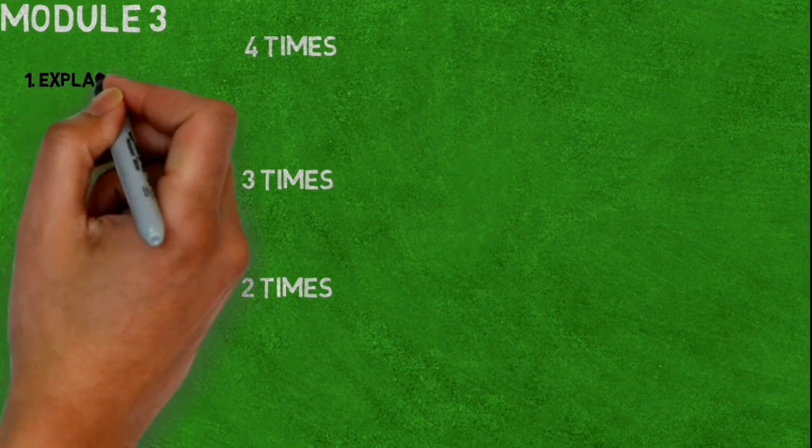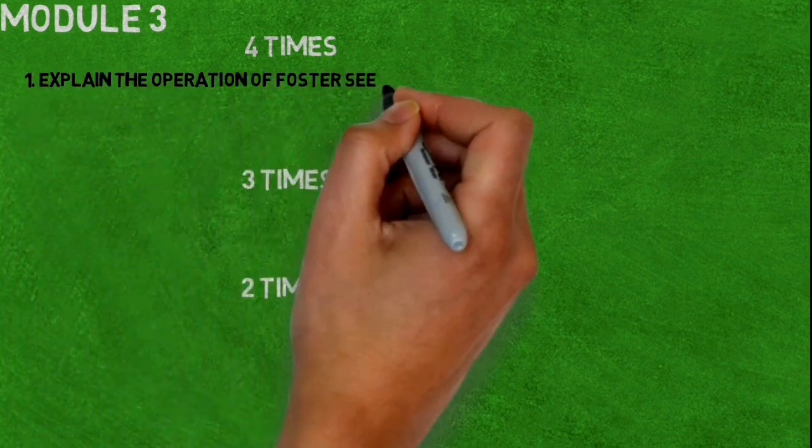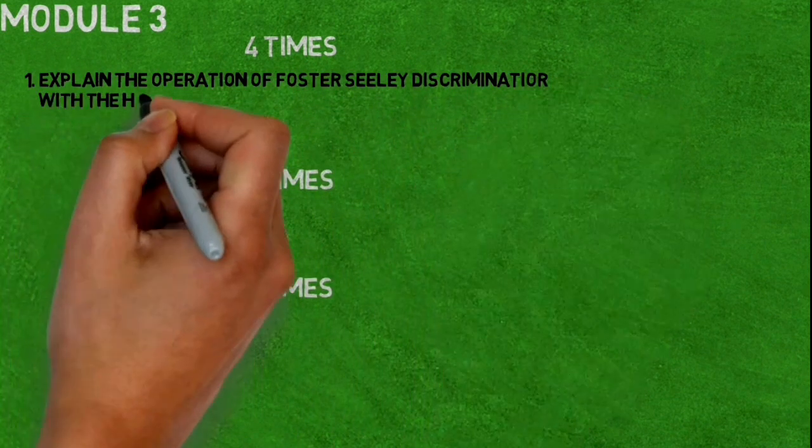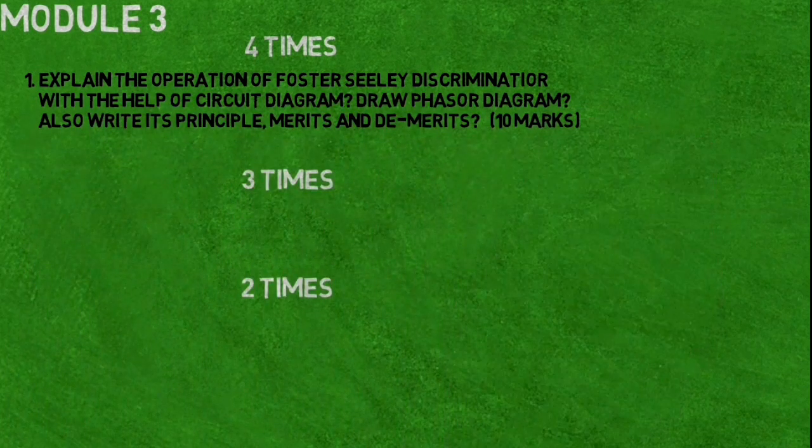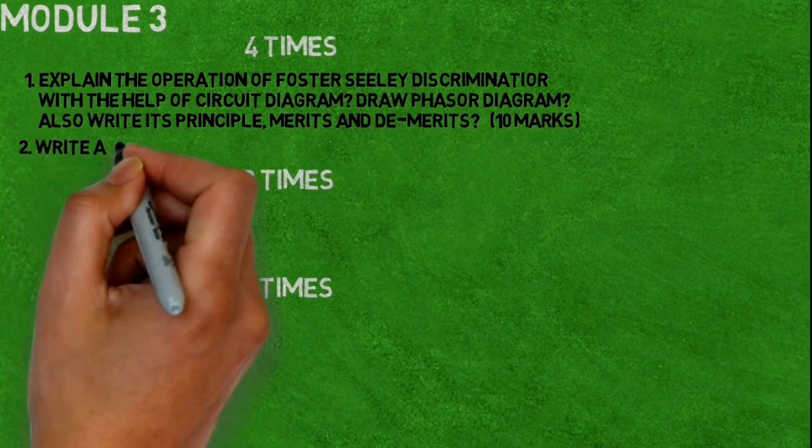Let's see Module number three, which is a jackpot. Four times repeated question is: explain the operation of Foster Seeley discriminator with the help of circuit diagram, draw phasor diagram, also write its principle, merits, and demerits. Second, write a short note on amplitude limiting and thresholding.